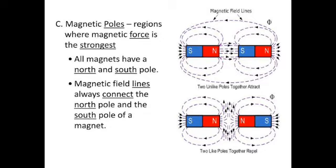The magnetic pole regions are where the magnetic force is strongest. When two opposite poles come together, the force of attraction is very strong. The poles — whether north or south — contain more magnetic force, whether repulsive or attractive. All magnets have a north pole and a south pole, and magnetic field lines always connect the north pole and the south pole of a magnet.